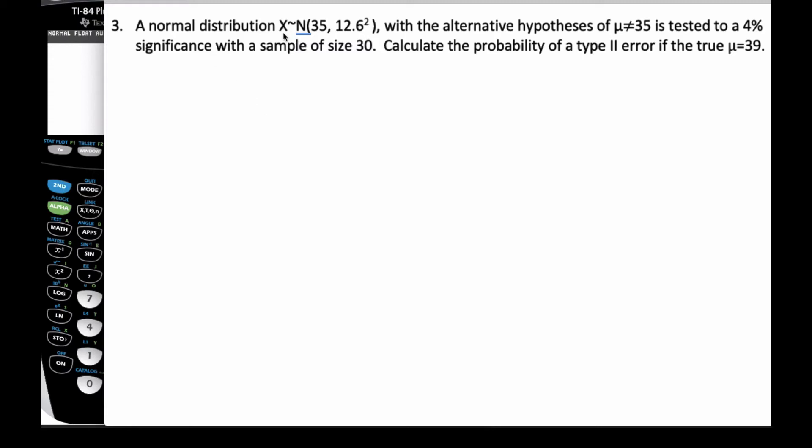All right, so we have a normal distribution with a mean of 35, standard deviation of 12.6, with the alternative hypothesis that mu is not 35. We're going to test at the 4% level of significance with a sample size of 30.